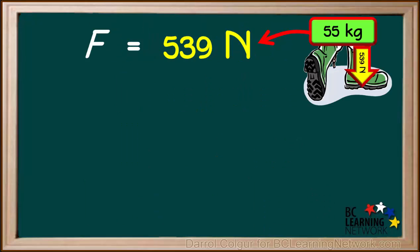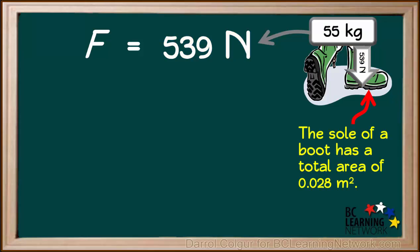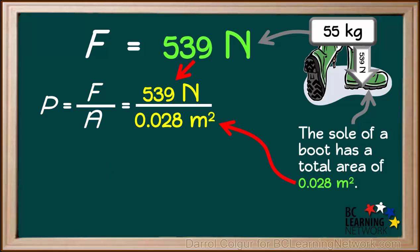In the previous problem, we discovered that a person with a 55 kilogram mass has a force of gravity of 539 Newtons. The sole of the boot she is walking on has an area of 0.028 square meters, so the pressure applied by the boot is equal to force divided by area, which is 539 Newtons divided by 0.028 square meters, which comes out to 19,250 Pascals.